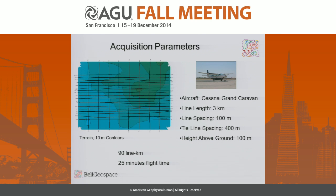The acquisition parameters: this is 100-meter line spacing. The system was flown in the Cessna Grand Caravan aircraft, which is kind of the smallest aircraft it can practically be flown in. This is an extremely small survey compared to our normal operations — only three kilometers long. Recently we've done surveys larger in surface area by more than a factor of a thousand. This survey only took 25 minutes of flying time, so it actually took more time to talk about this project than it did to fly it.